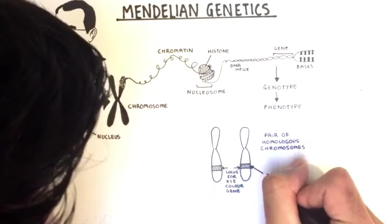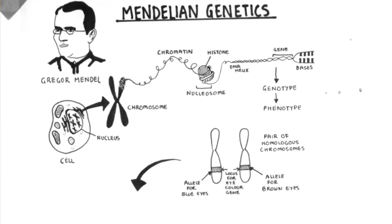Let's move on to the second implication of Mendelian genetics, which is that higher organisms have genomes that are diploid. What I mean by diploid is that when we look at the autosomes of these organisms, there are two complete sets of genes. The only exception here is the sex chromosomes — in sex chromosomes, there will be X and Y chromosomes, and they are present in numbers that are appropriate for the sex of the individual.